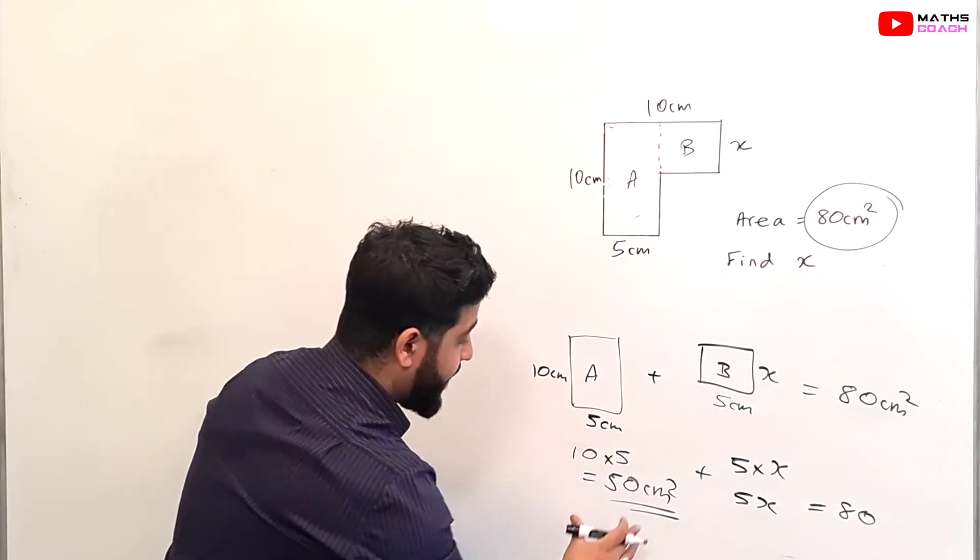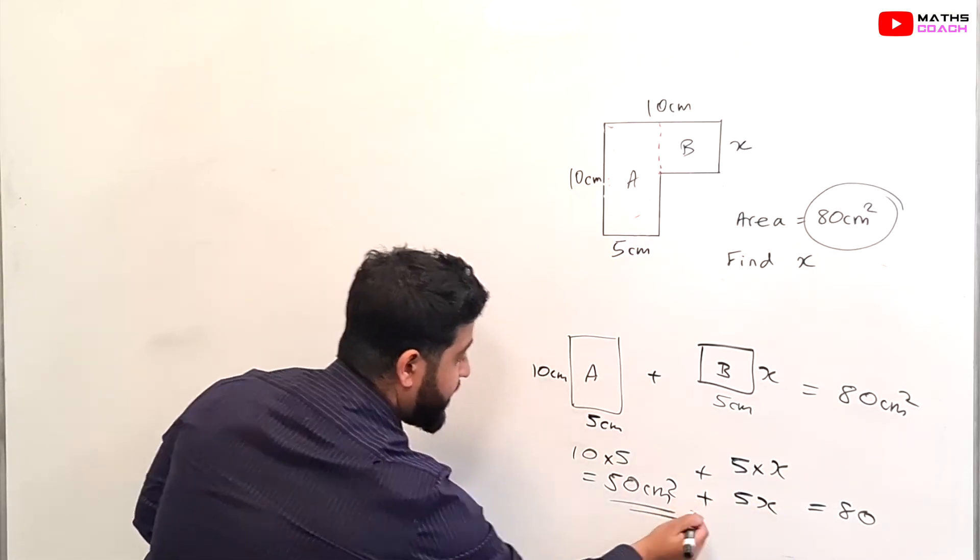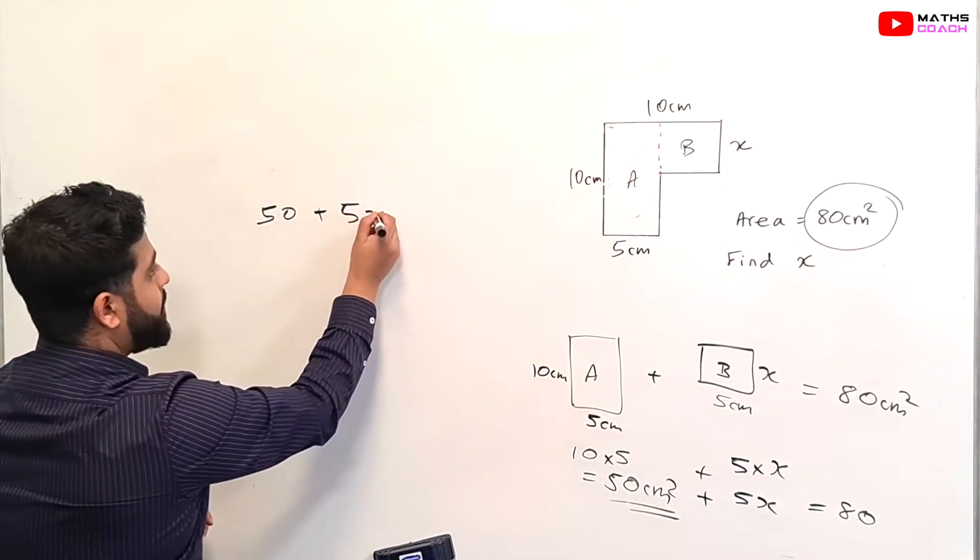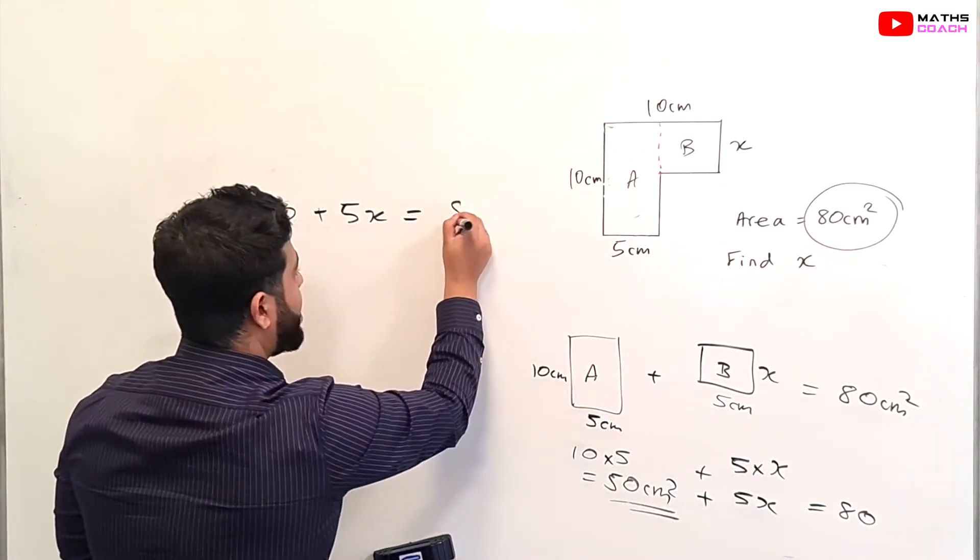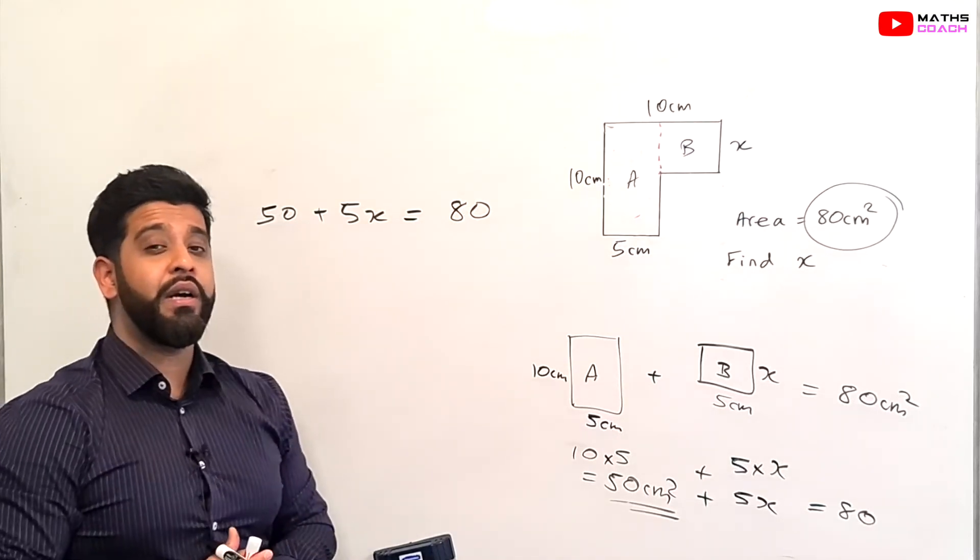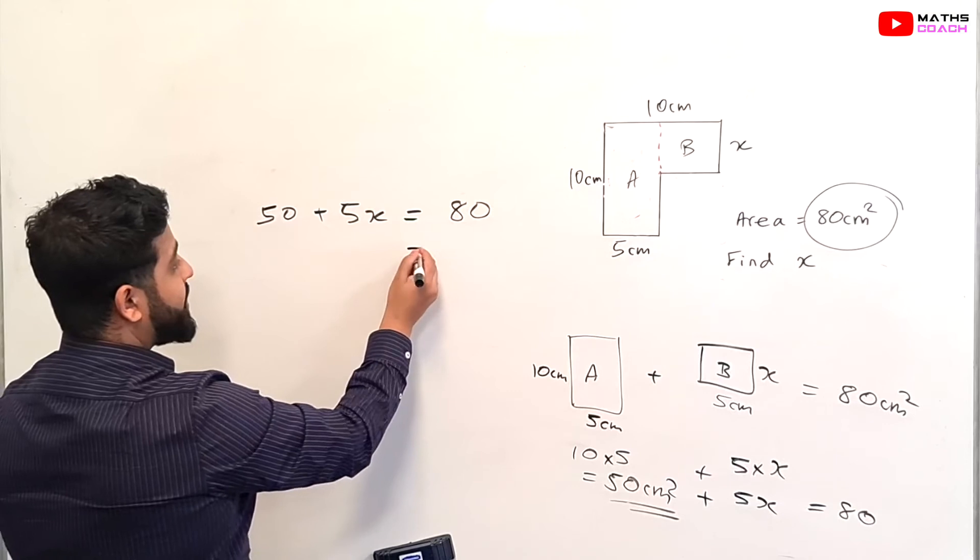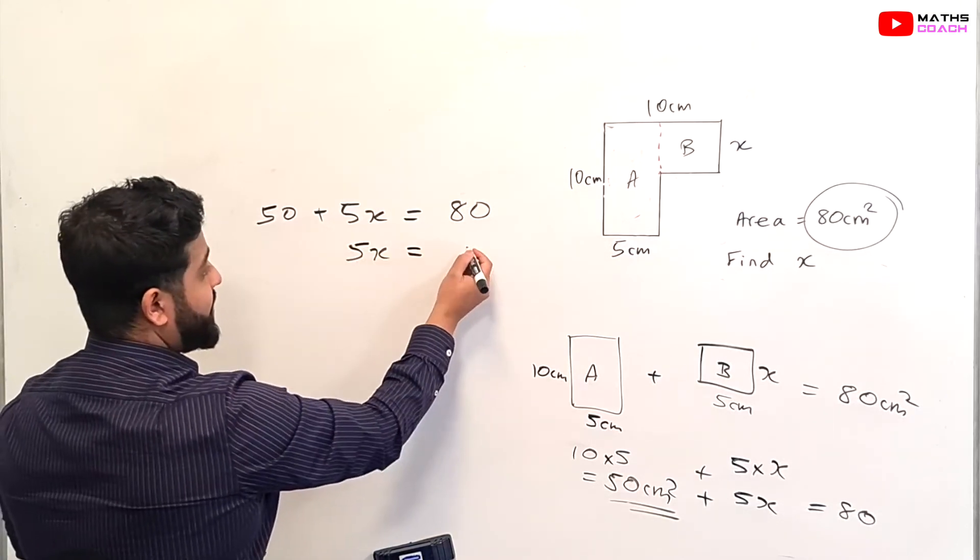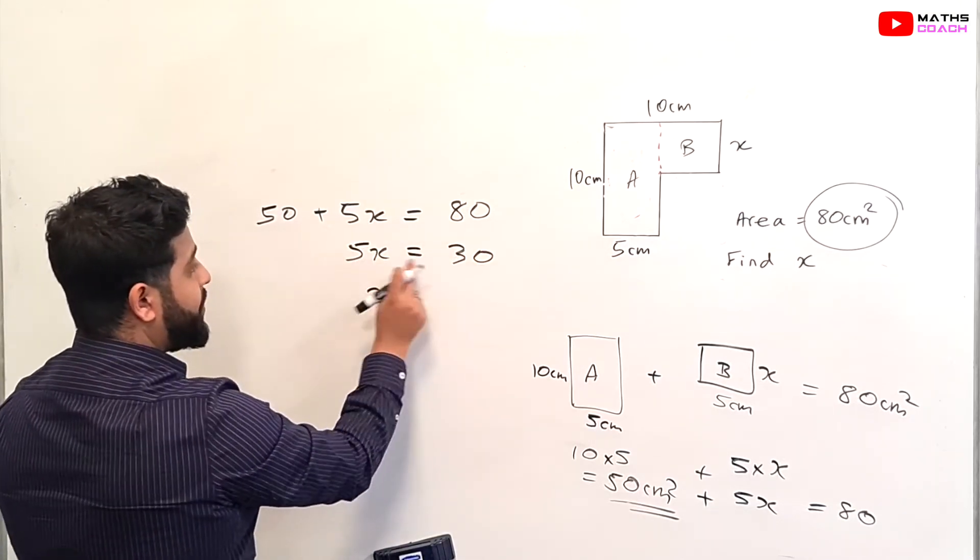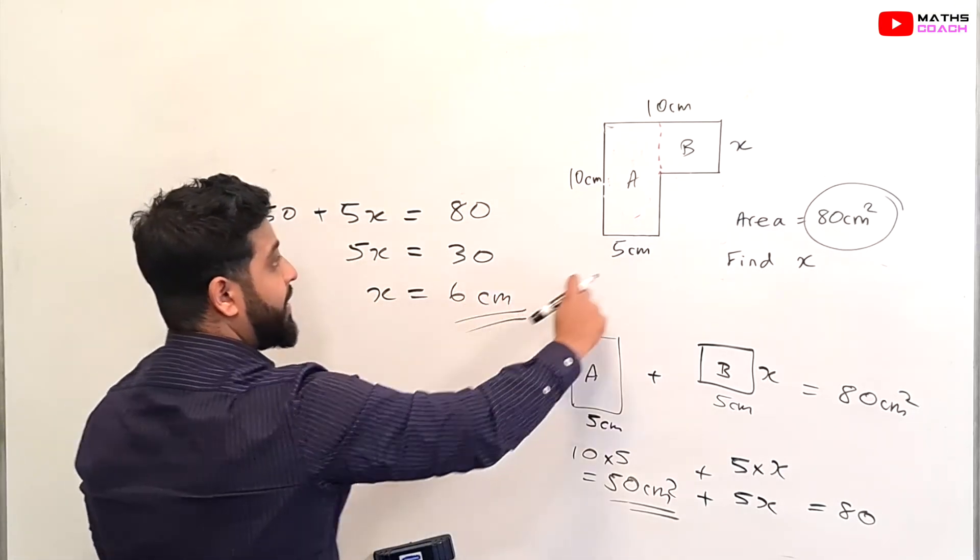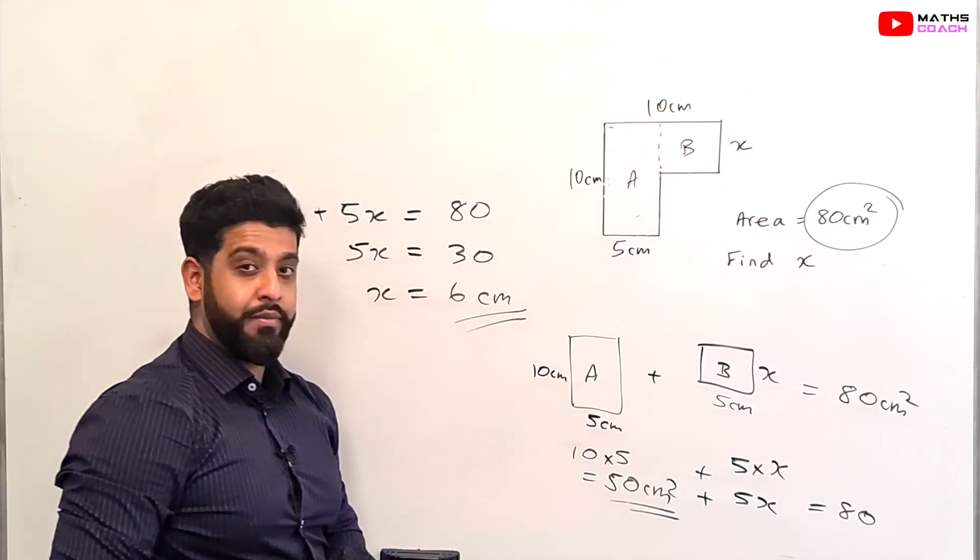Now what we can do is write down this equation separately. So we have 50 plus 5X is equal to 80 and therefore it now becomes a linear equation which we can solve. So we take the 50 over to this side to give us 5X is equal to 30 and then we do 30 divided by 5 which is 6 centimeters. So the length X is 6 centimeters.